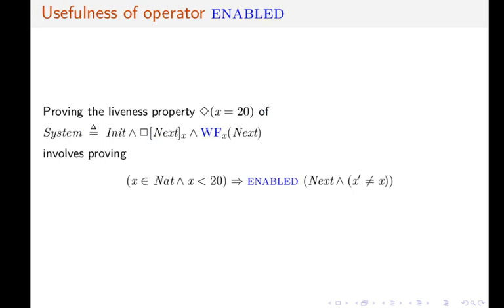In summary, the operator ENABLED is useful for reasoning about liveness properties, because when we write proofs of liveness properties, at some point in the proof, we need to prove a formula that contains ENABLED like the formula that is on the slide.